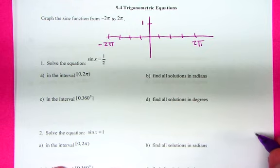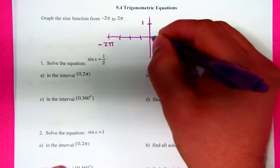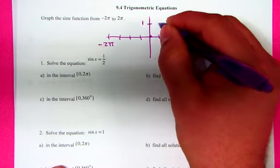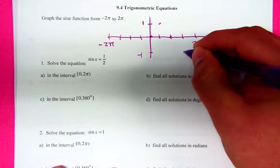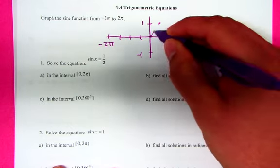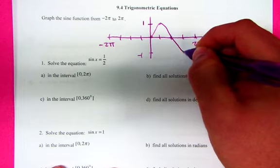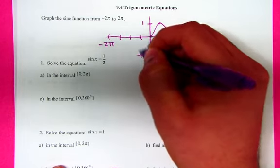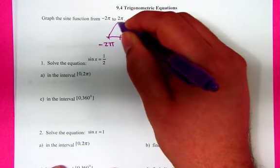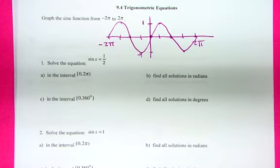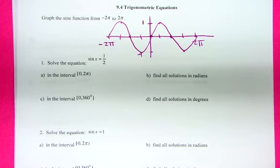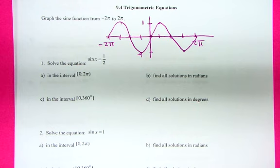Sine starts where? Zero, goes up, comes down, down to negative one, back up to zero, and then we can just follow the pattern backwards. So this would be a rough sketch of two periods of the sine equation, right?